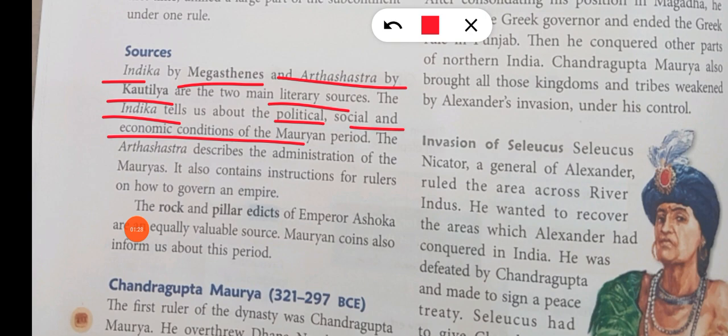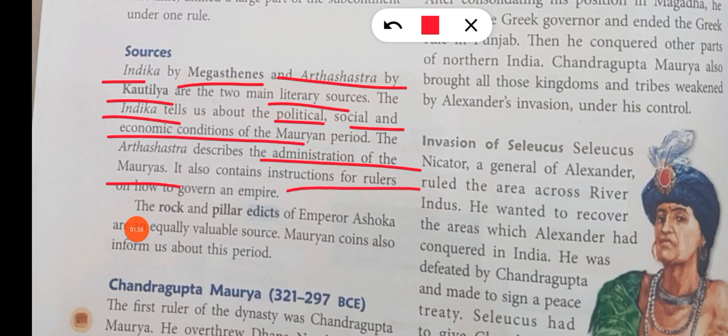Indica covers the Mauryan period's society, politics, rulers, and economic condition, and was written by Megasthenes. Arthashastra, written by Kautilya, covers the administration of the Mauryans. It also contains instructions that every ruler needs to follow if he wants to govern the empire properly. Arthashastra gives instructions for rulers on how to govern their empire.